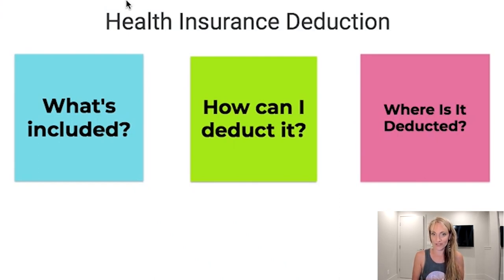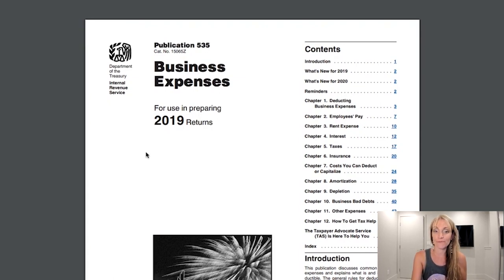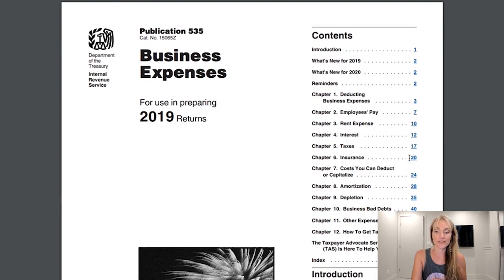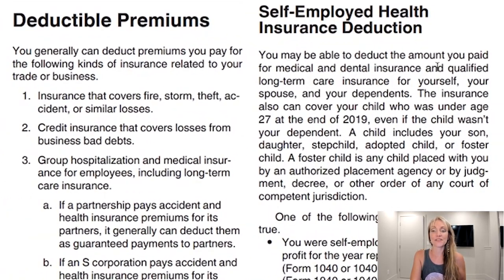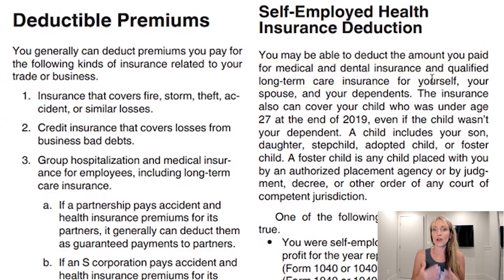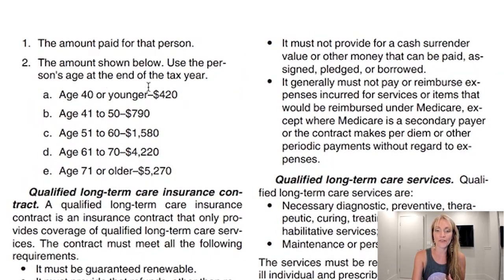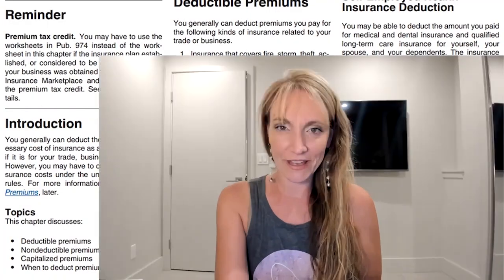What's included in the health insurance deduction? Looking at Publication 535 for business expenses, chapter 6 for insurance, it tells us that we can deduct any amount that we pay for medical and dental insurance as well as long-term care insurance. The long-term care insurance does have limitations, explained on the next page, and this can be for you or your family. However, to qualify for the deduction, you can't have been offered health insurance through a part-time or full-time job outside of your business, or if you're married and your spouse was offered health insurance and you declined it.